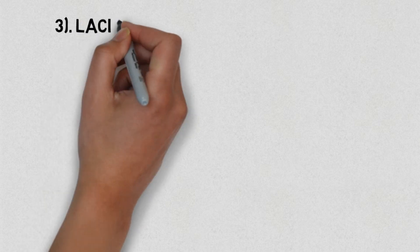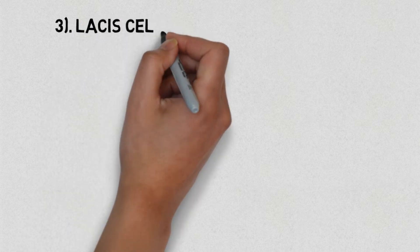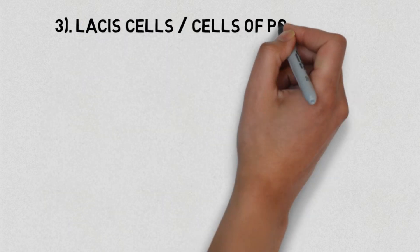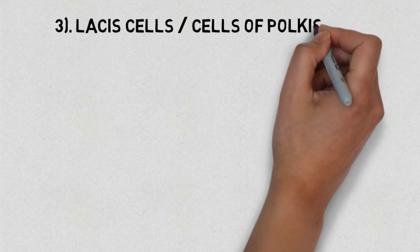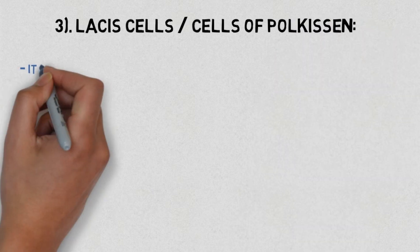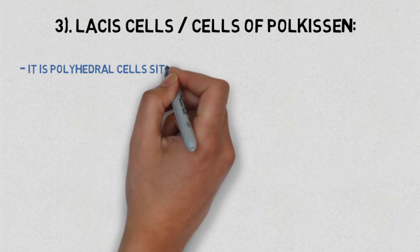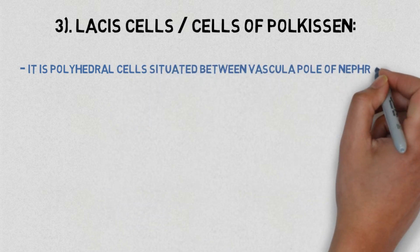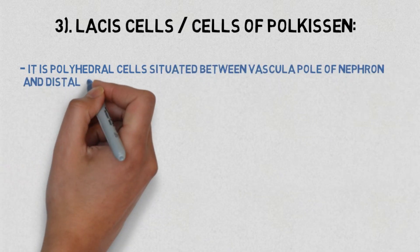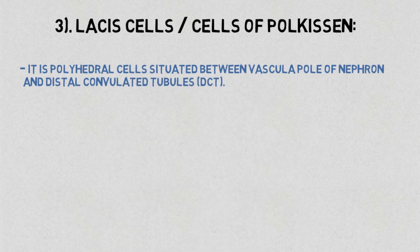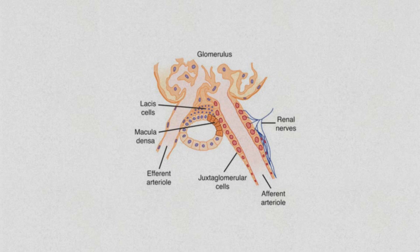Number three: lacis cells, or cells of Polkissen. These are polyhedral cells situated between the vascular pole of the nephron and the distal convoluted tubule (DCT). So we have now discussed all three types of the juxtaglomerular apparatus.